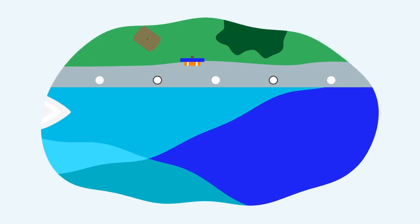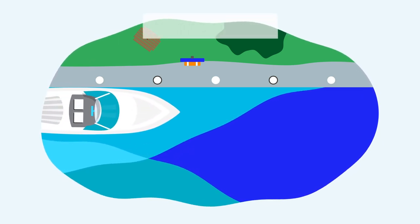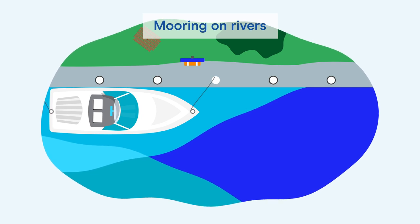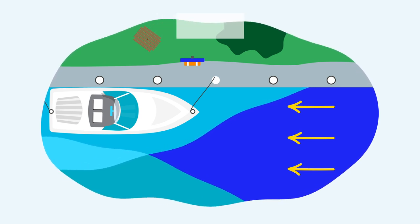Some moorings are easier to manage than others. Mooring on rivers requires extra attention. You should moor with the front of your boat facing into the river's stream. This gives you more control as you slow to a halt.